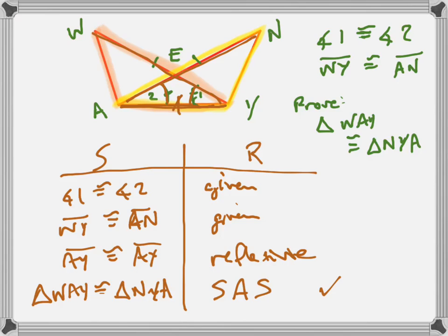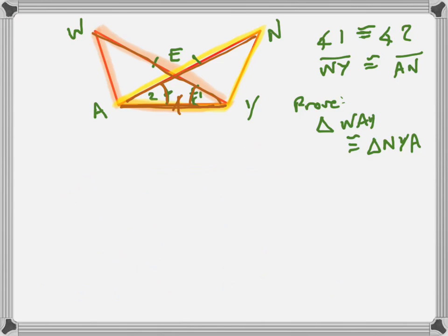If you want to do the flow reasoning, let's try that. Let's erase this and try that. So I think what they would do is they would say something like angle one is congruent to angle two, given, something like this, WY is congruent to AN, given.